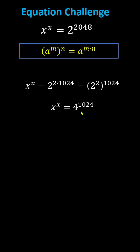And now we repeat the process. We write 4 to the power of 1024 as 4 to the power of the product of 2 and 512, which is equal to the square of 4 to the power of 512, giving us 16 to the power of 512.